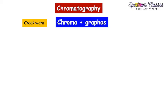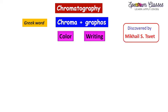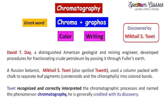Chromatography is composed of two Greek words: the first is 'chroma' and the second is 'graphos.' Chroma means color and graphos means writing. This term was coined by the scientist and botanist M.S. Tswett. Before moving to the chromatographic technique and its definition, I'll give you a brief overview of how it was discovered.